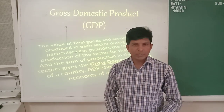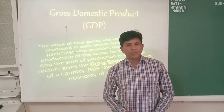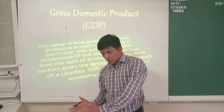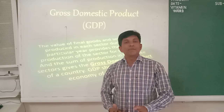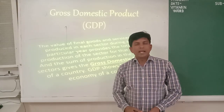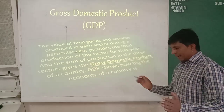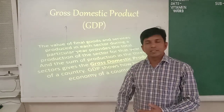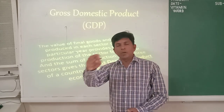GDP is defined as: the value of final goods and services produced in each sector during a particular year provides the total production of that sector, and the sum of production in the three sectors gives the GDP — Gross Domestic Product of the country. Every good has a value. A product starts as raw material from the primary sector, goes to the industrial sector where it is processed and becomes a finished good, and when it reaches the market, transportation and other costs are added. That final value, added across all three sectors in one financial year, is known as GDP.